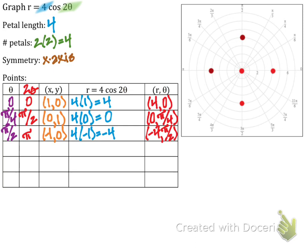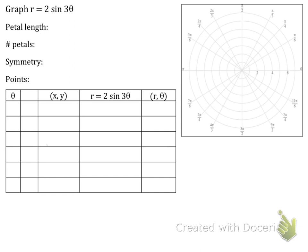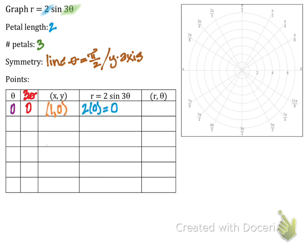For the next example, petal length is two, n is three, so we have three petals. This is a sine, so we have y-axis symmetry. We're looking at three-theta. Starting with theta equals zero, I get the ordered pair (0, 0) — we're always going to have that center point. For the next theta, three-theta has to be something we can deal with on the unit circle, so I chose theta equals pi over three, which gives three-theta equals pi. Plugging in, I get (0, pi), which is already plotted.